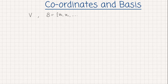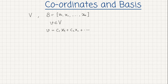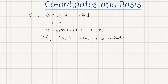Suppose the basis has elements x1, x2, ..., xn. Then we know that if we take any element in the vector space, it can be expressed as the linear combination of the elements of the basis. So we can write V as c1*x1 + c2*x2 + ... + cn*xn, where c1, c2, ..., cn are some scalars. These scalars are called the coordinates of vector V relative to the given basis.